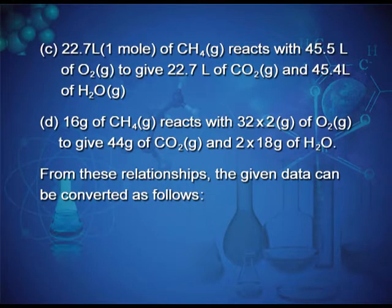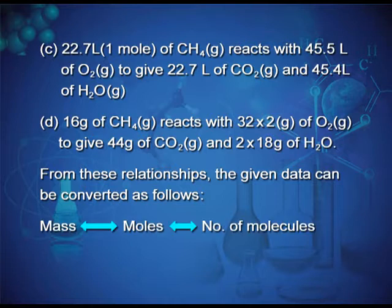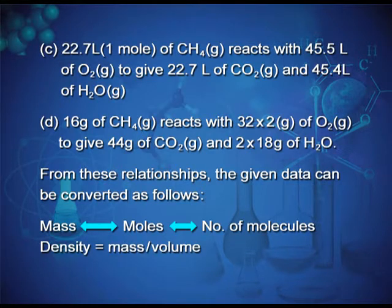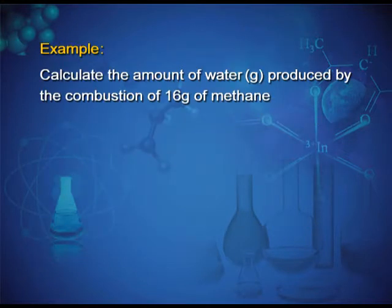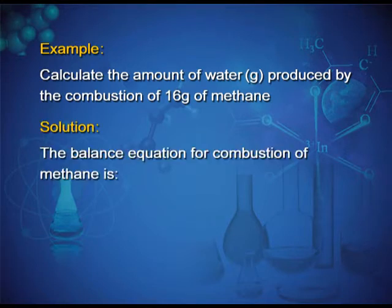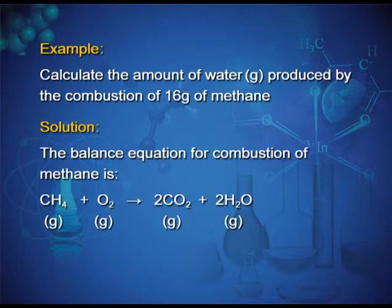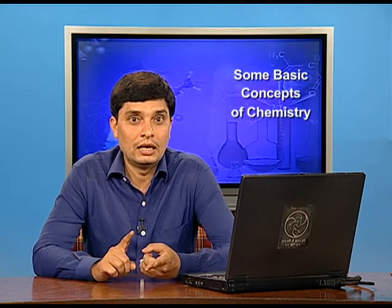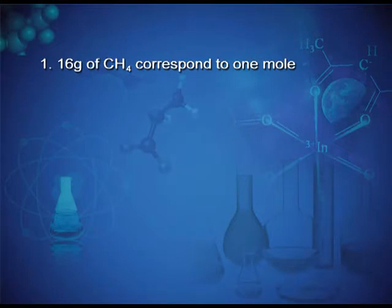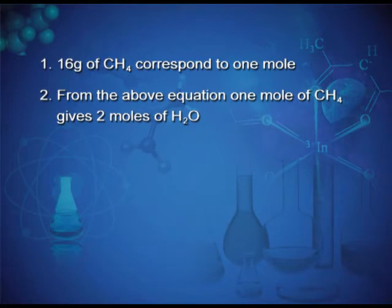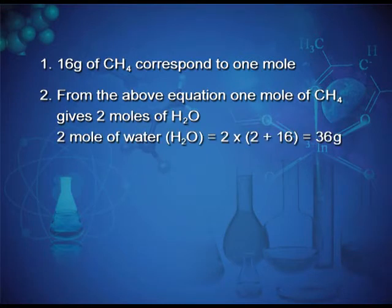From these relationships, the given data can be converted: mass to moles and moles to number of molecules — these are interchangeable with each other. Also, density equals mass divided by volume. Example: calculate the amount of water produced by the combustion of 16 g of methane. The balanced equation is CH₄ + 2O₂ → CO₂ + 2H₂O. Since 16 g of CH₄ corresponds to 1 mole, and from the equation, 1 mole of CH₄ gives 2 moles of H₂O, two moles of water equals 2 × 18 = 36 g.